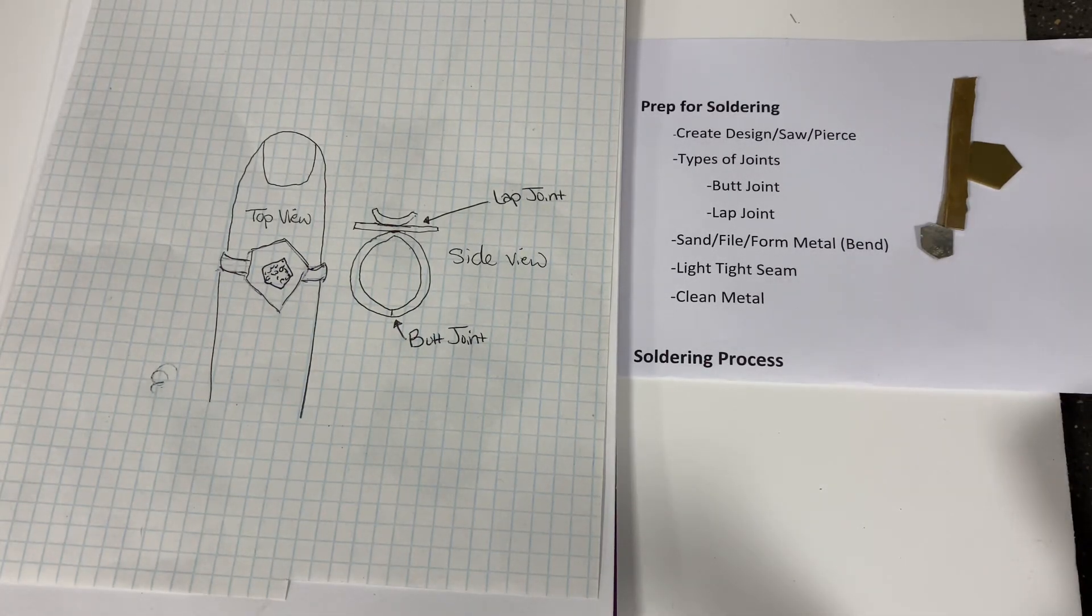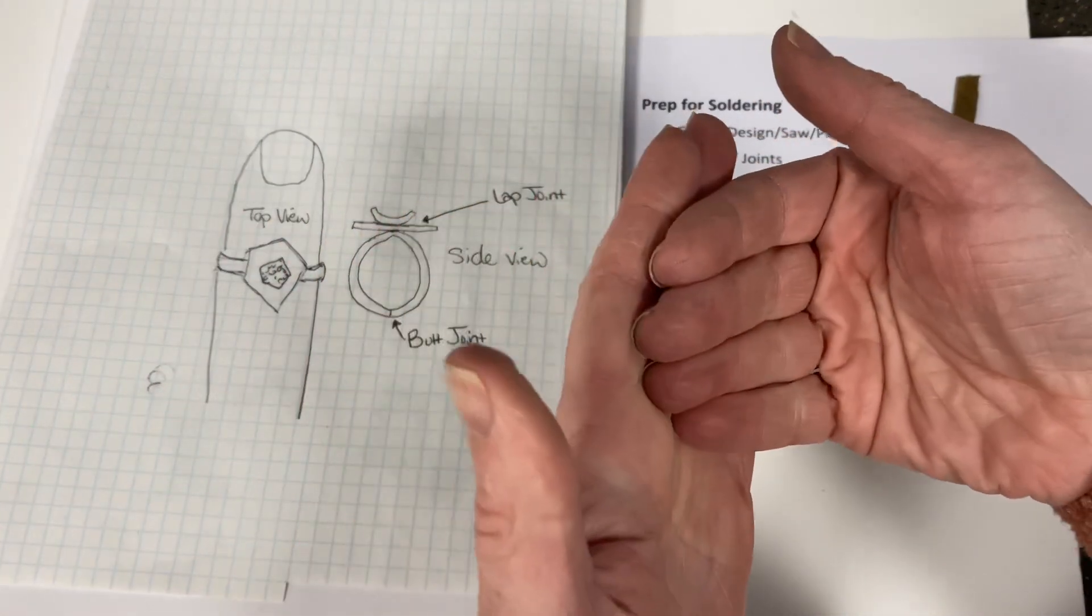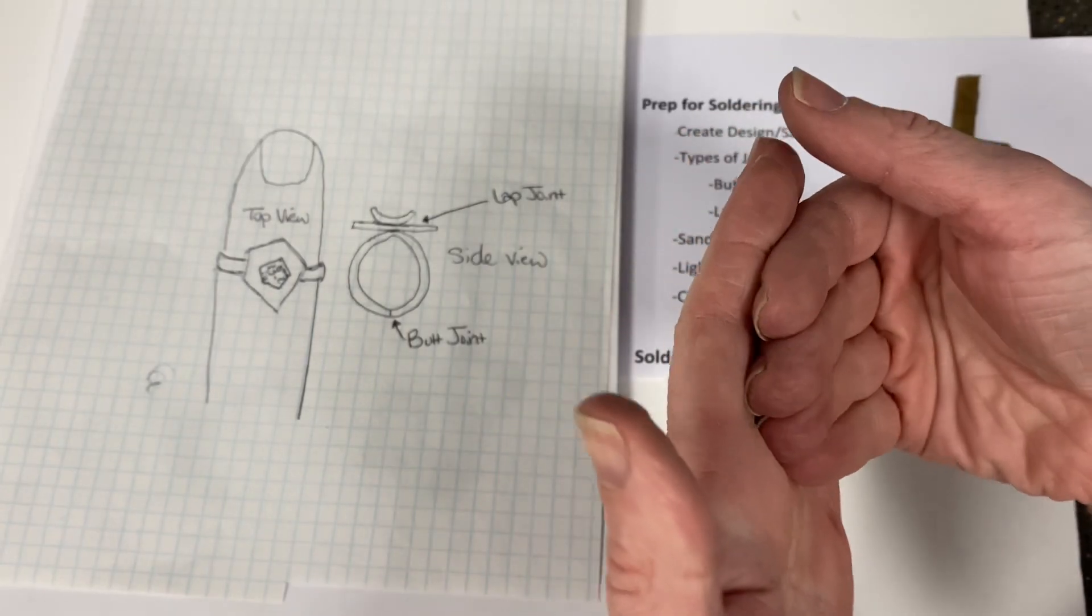Soldering is the process of using solder, which in this case we use silver solder, to melt in between two pieces of metal to kind of glue them together permanently.